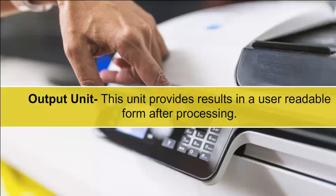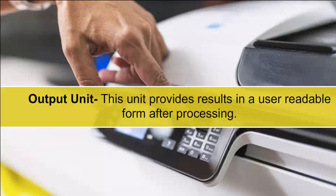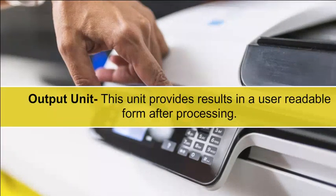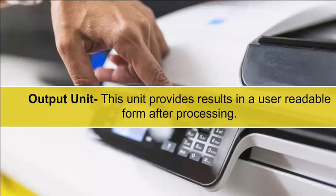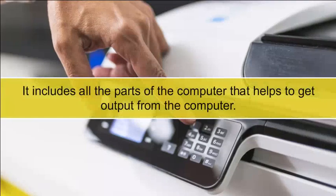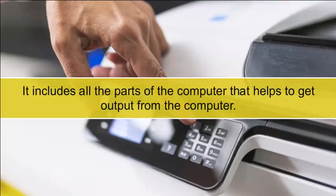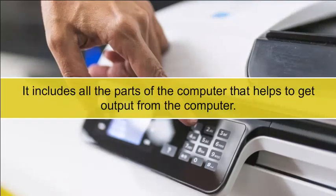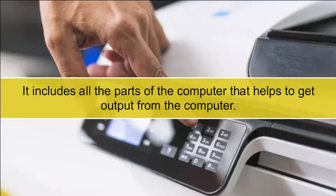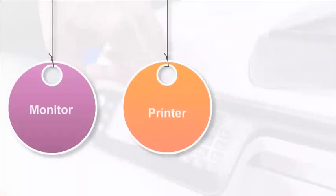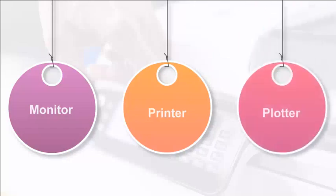The Output unit provides results in a user-readable form after processing. It includes all the parts of the computer that help get output, such as monitor, printer, plotter, etc.